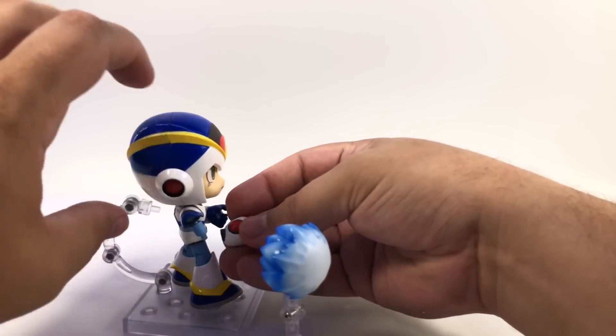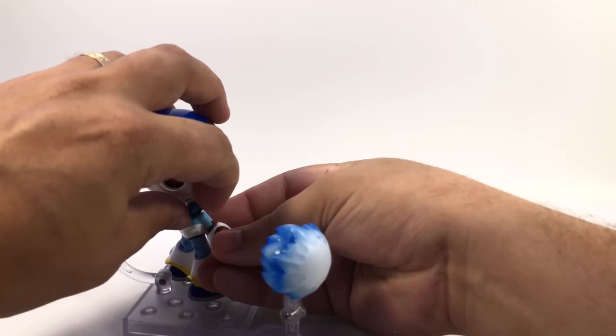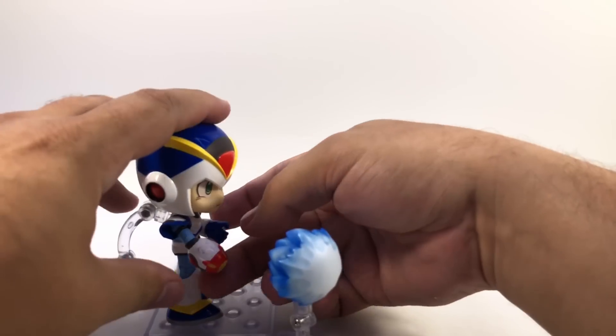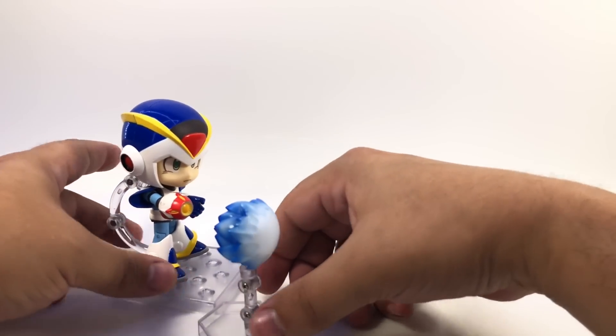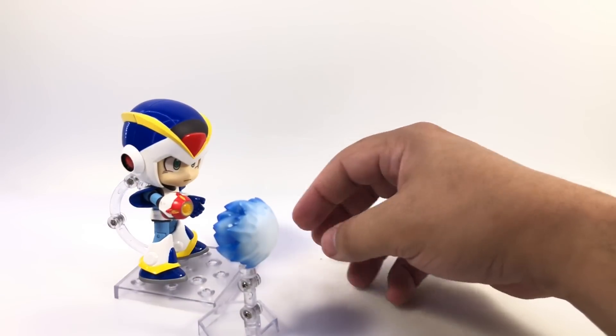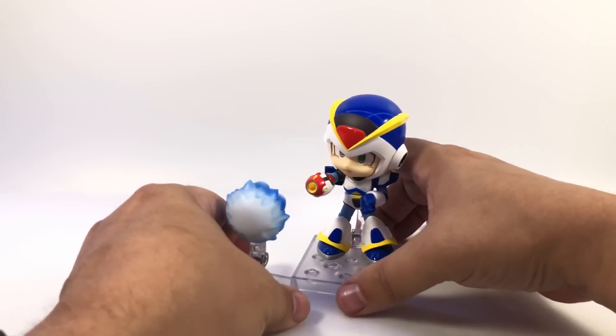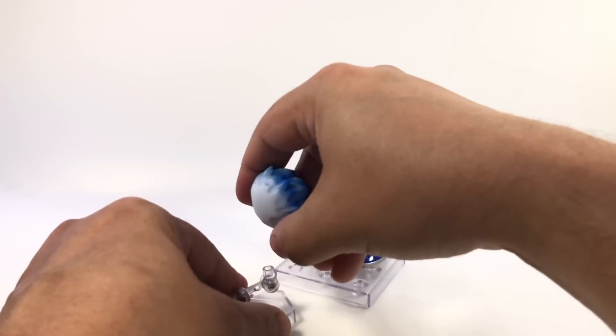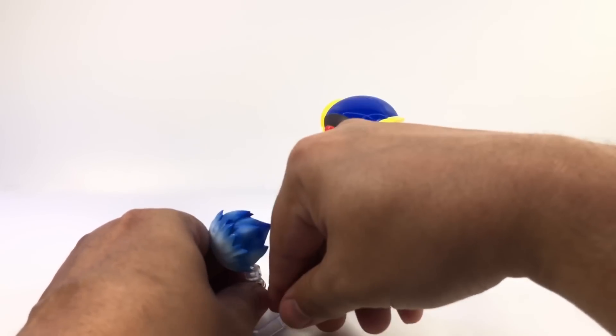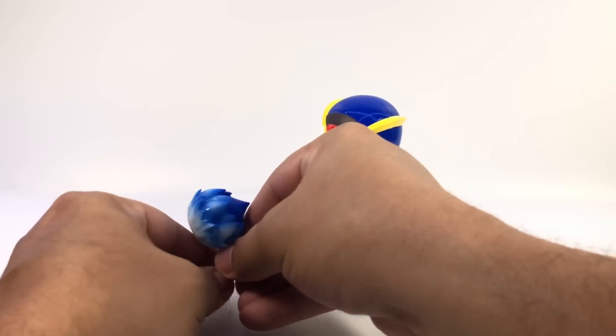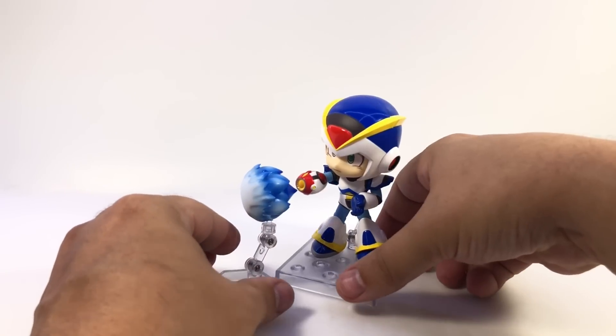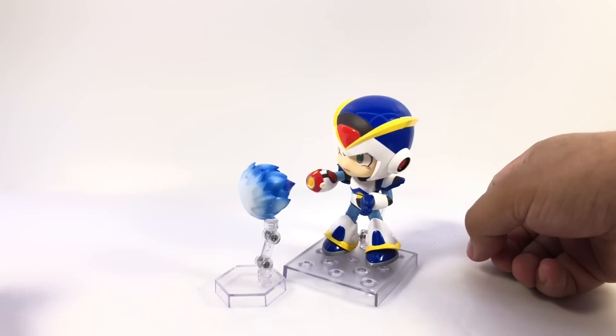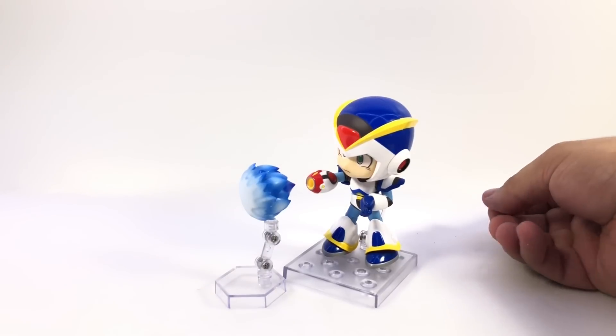Put his blaster back on. There we go, so it looks like he's shooting a giant blue ball. You can bring this back as well, or actually rotate it up like this, bring it a little closer. Well that does offset the balance a little bit.